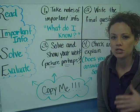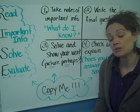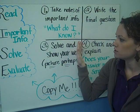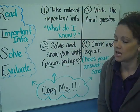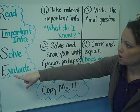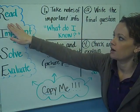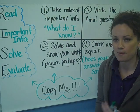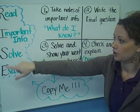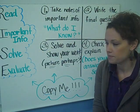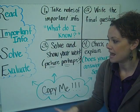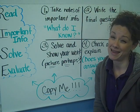When we solve word problems, it's important to organize our information and to see what the question is really asking of us. The first problem-solving strategy is called RISE. For each letter, there's a step: R — read the problem first; I — recognize the important information; S — solve the problem; and E — evaluate and make sure that your answer makes sense.